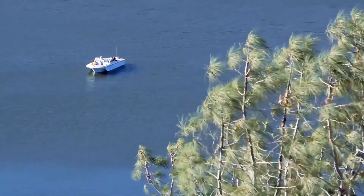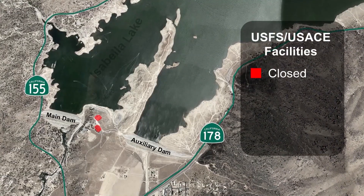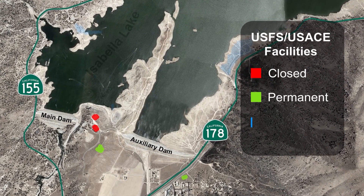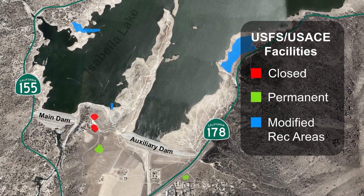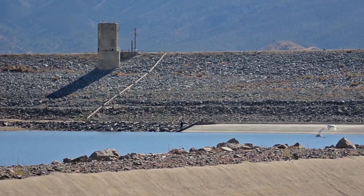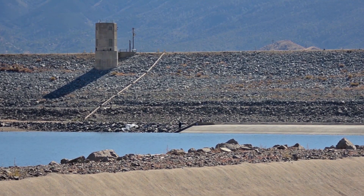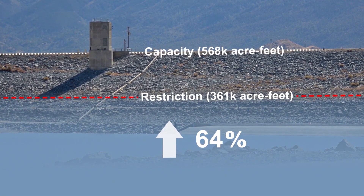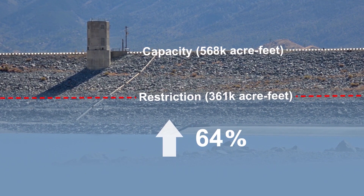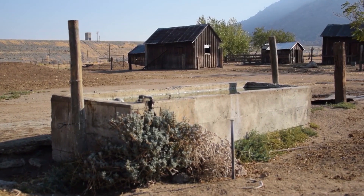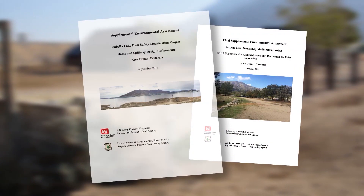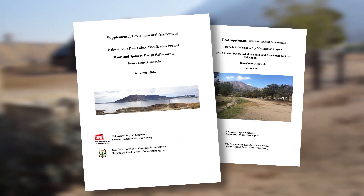Isabella Lake is a mecca for outdoor activities, and the Corps is mindful of that. While some recreation areas will be temporarily closed, they will be relocated, along with other areas that will be expanded or enhanced to better serve visitors. Because of the current dam safety risks, a water restriction limits the reservoir to approximately 64 percent of capacity. The Corps has also done extensive analysis of cultural resources and a detailed environmental review to minimize impacts to wildlife and the environment.